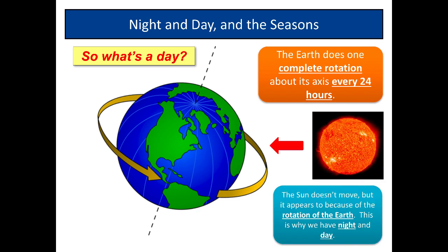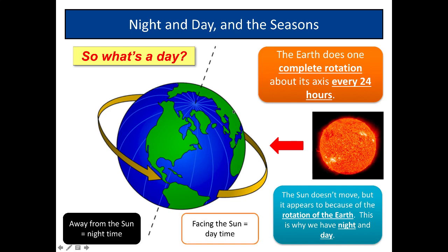This rotation makes the Sun appear to move, but the Sun doesn't move — it appears to because of the rotation of the Earth, which is why we have night and day. On the east coast of America, as the Earth rotates, it appears to them that the Sun is moving in the sky, but it's not the Sun that's moving, it's them. If you are facing away from the Sun, it's night time; if you're facing towards the Sun, it is daytime.